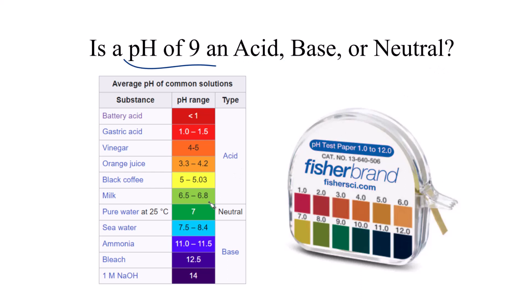So for the pH scale, 7, that's right in the middle, that is neutral. So if you have a pH of 7, it's a neutral solution.